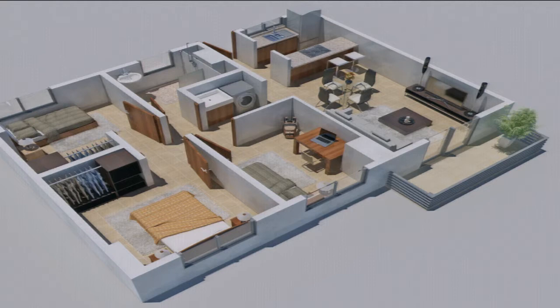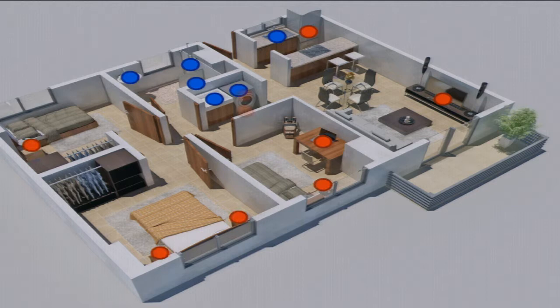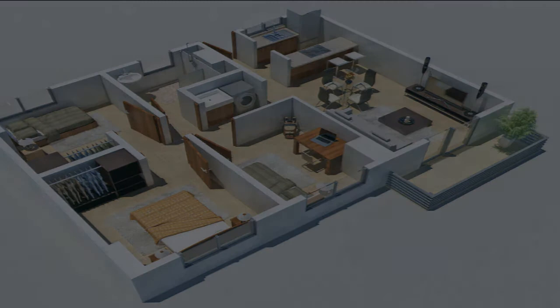One method — actually used in this building — is to install a distributed network of sensors at each appliance or electrical outlet. But this gets expensive, doesn't work well for retrofitting, may require professional installation, and needs battery replacement over time. So it has real drawbacks for scalability.